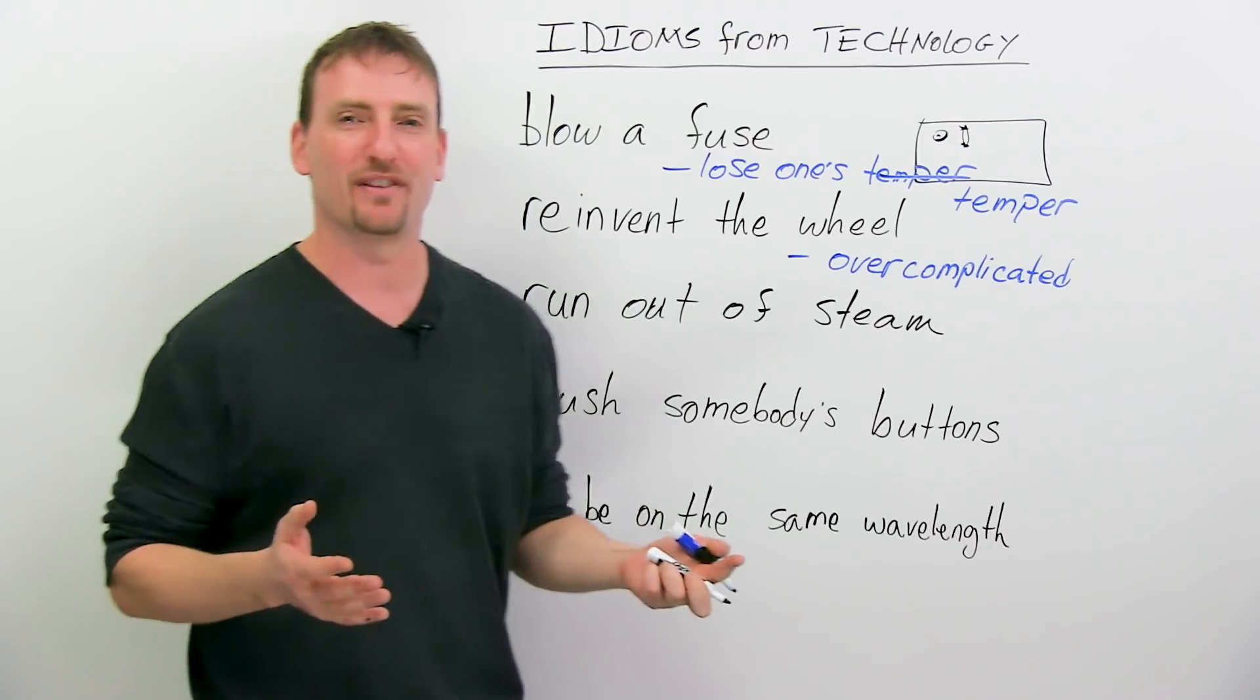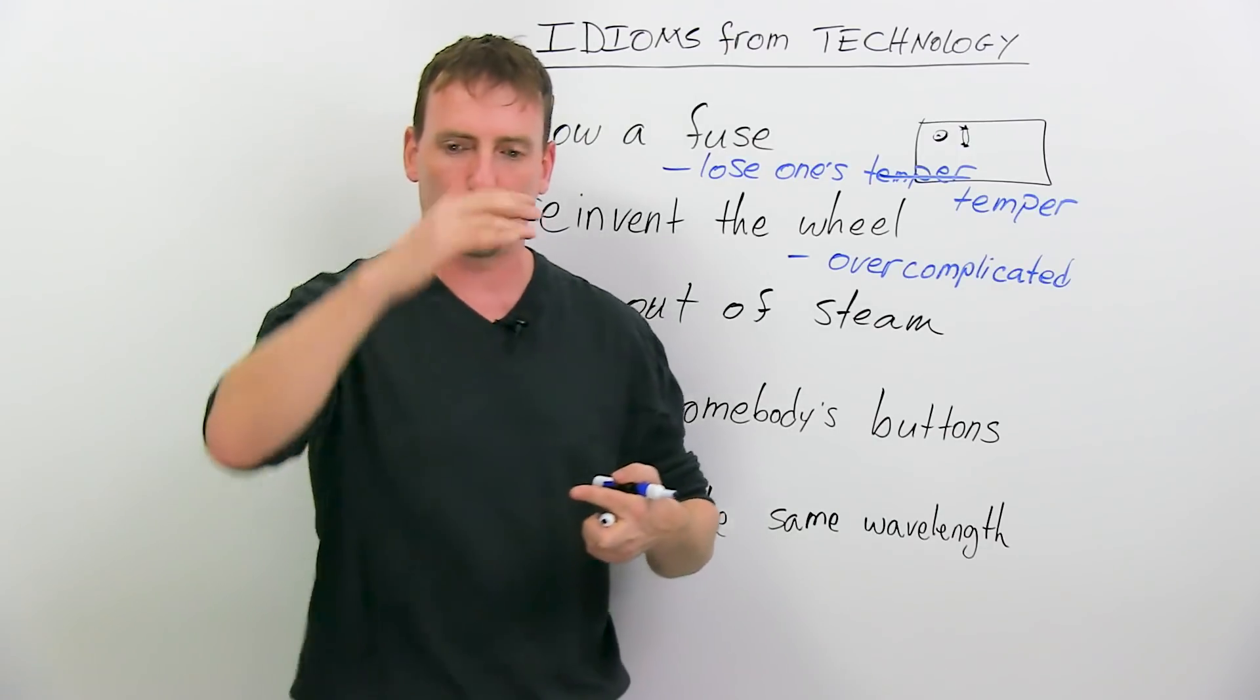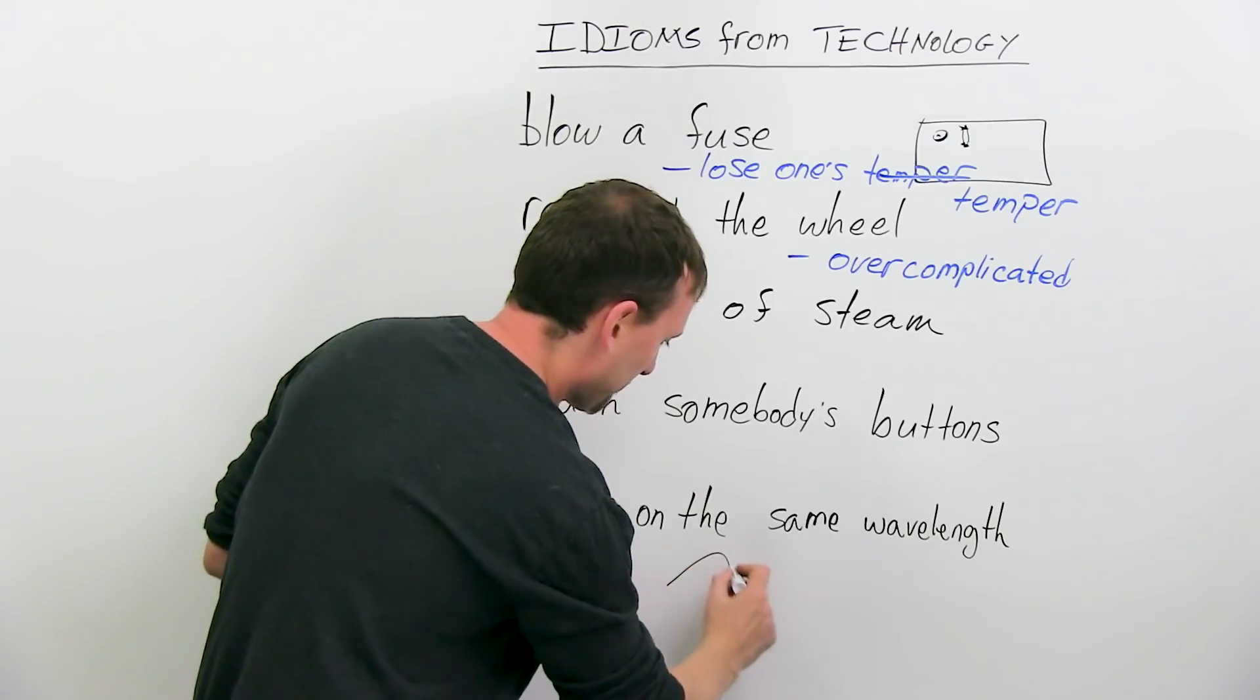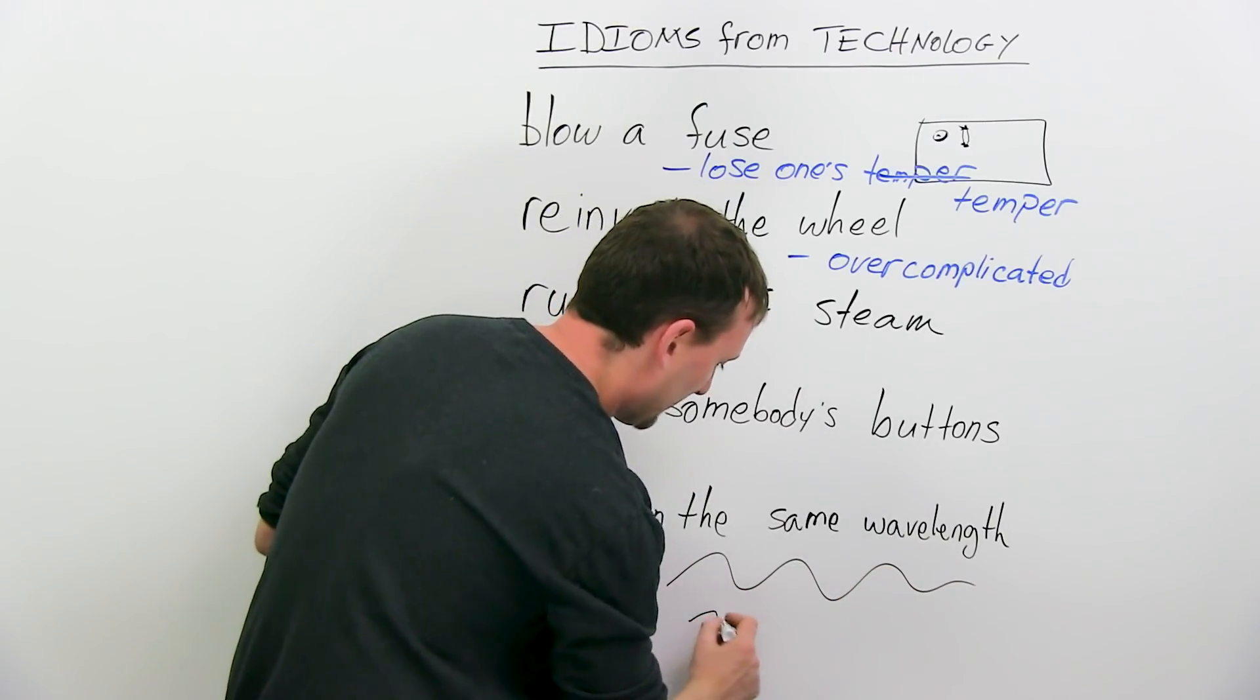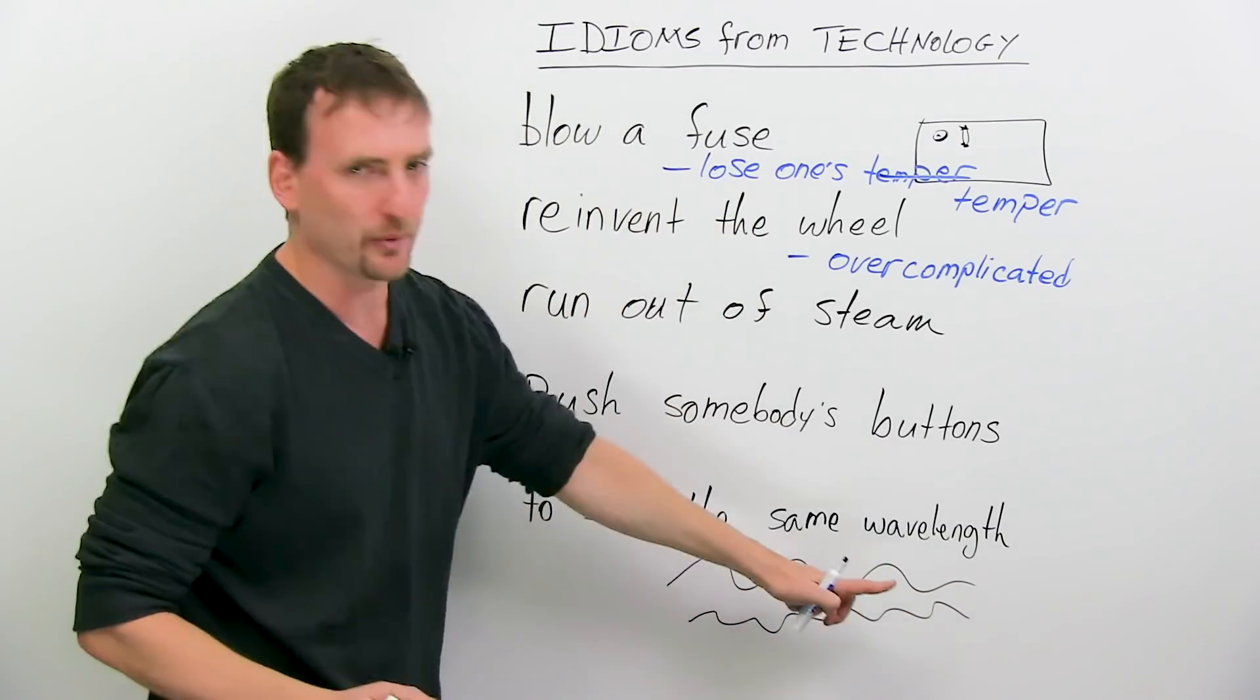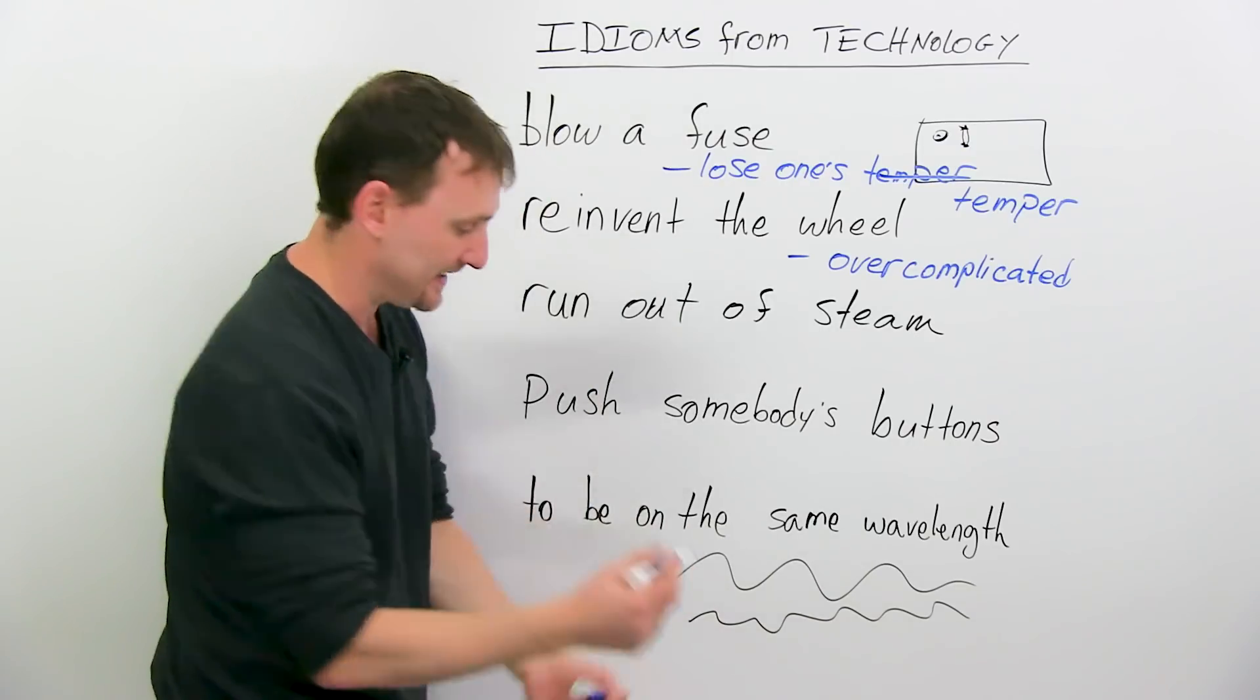And to be on the same wavelength. So if two people are on the same, this is the wavelength. And then you have two different wavelengths. If you and I are on the same wavelength, then we're thinking the same.